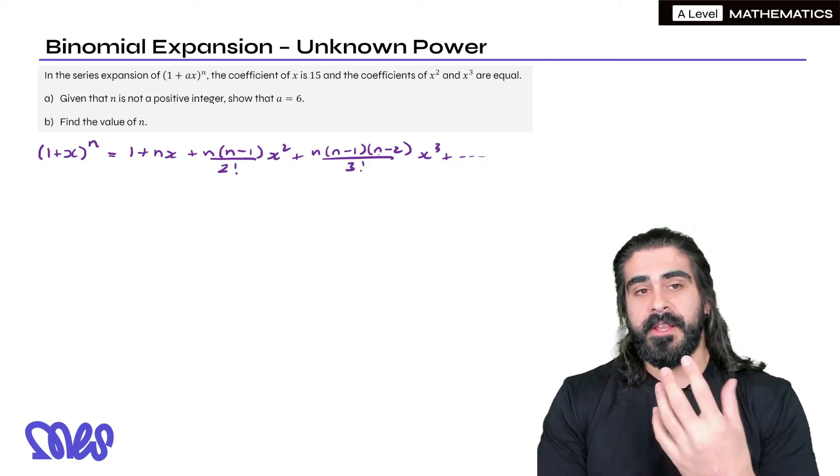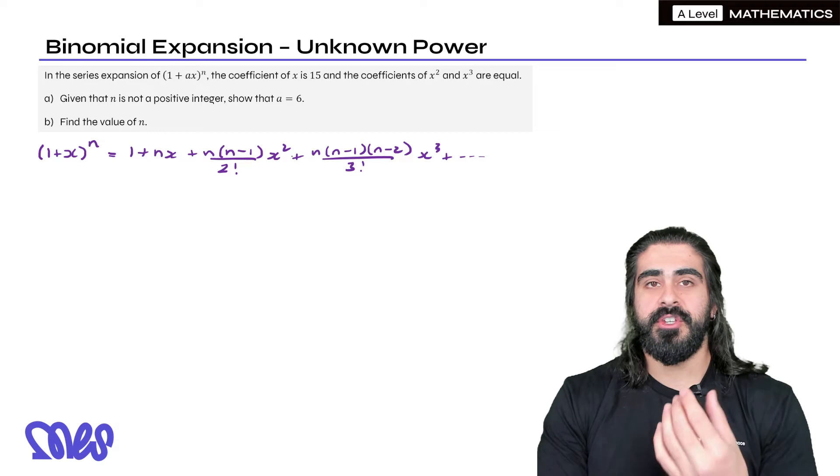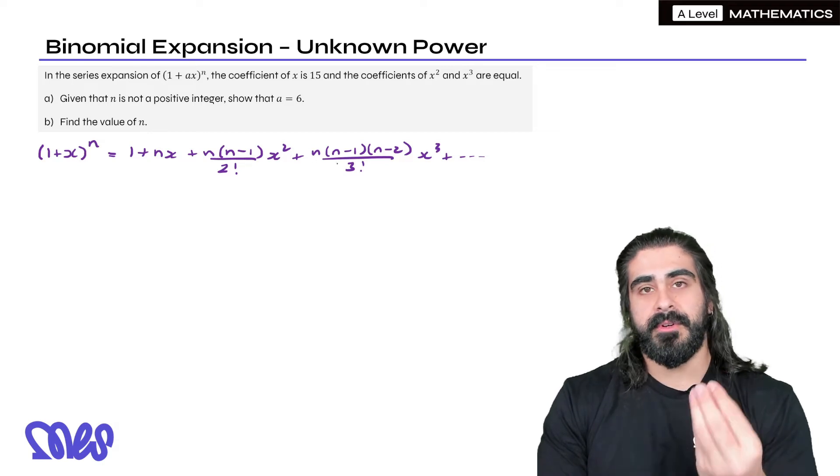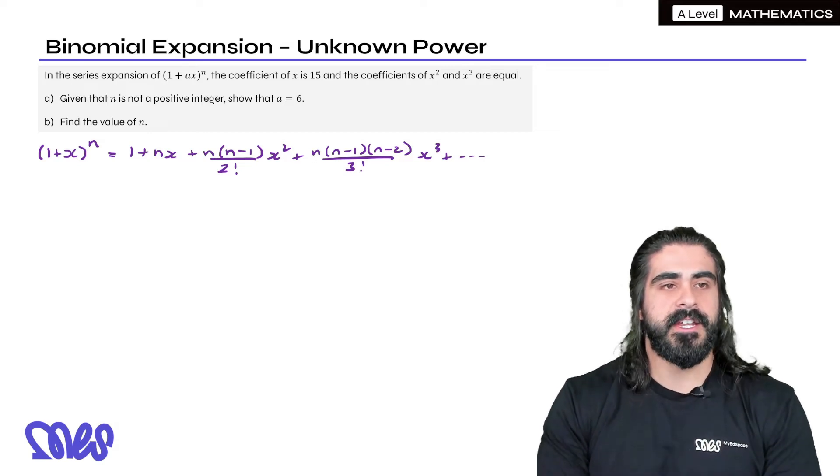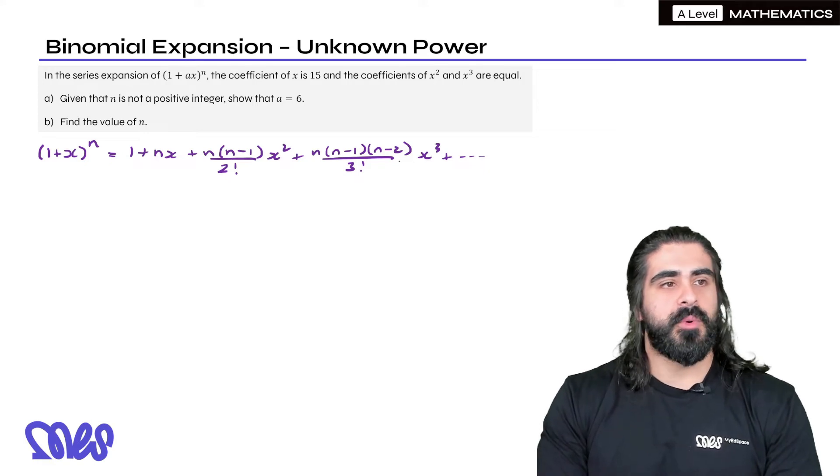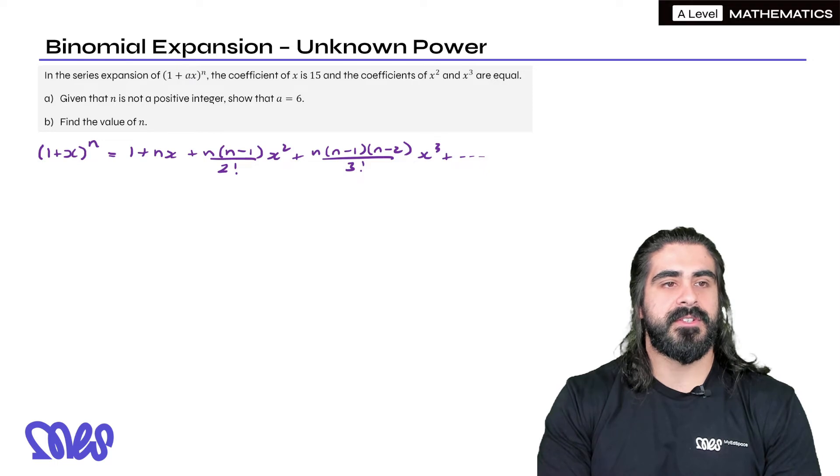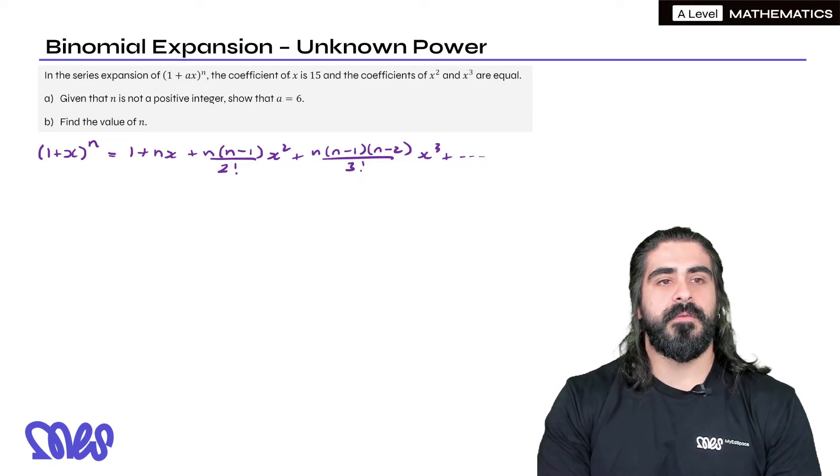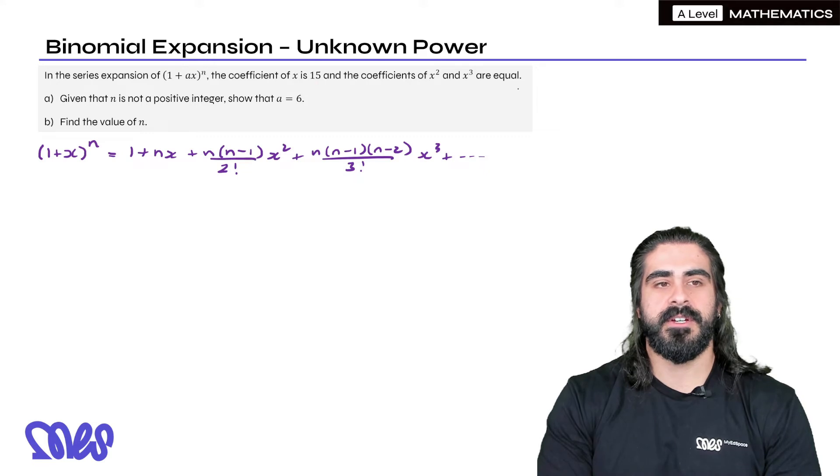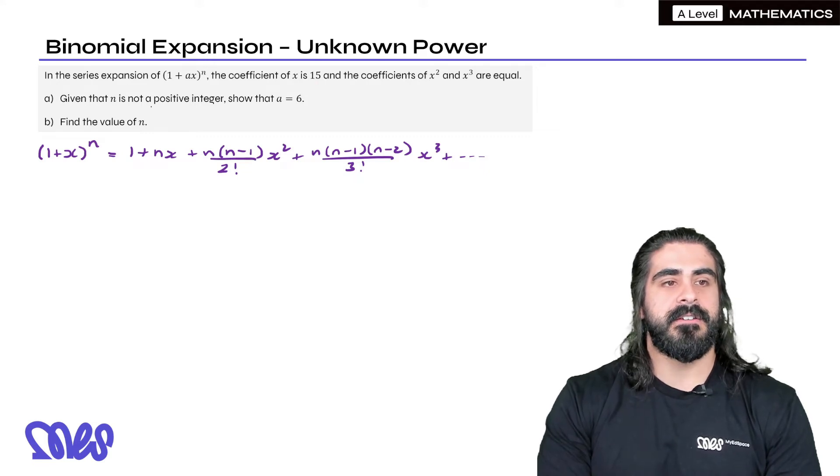Now there's only one formula that you need to remember and that's this one and you can use it when n is a positive integer, it's just less used. We prefer to use the n choose method. So what does this question say? It says in the series expansion of (1 plus ax) to the power of n, the coefficient of x is 15 and the coefficients of x squared and x cubed are equal. Given that n is not a positive integer, show that a has to be 6.